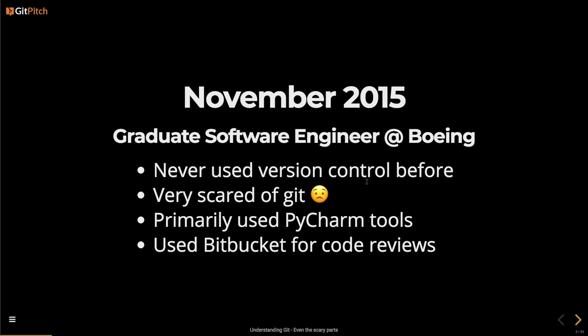Bitbucket has a similar pull request model to GitHub. When you have a pull request, you can have multiple commits in it. As a new developer, I had certain things that I was doing that weren't necessarily best practices. If I had a typo somewhere in my code, instead of amending the commit or rebasing it, I would push another commit saying 'fixed typo' or something like that. Logically, that's not an independent commit — I should have just rebased or amended it. As a result, my commit messages also didn't make a lot of sense.